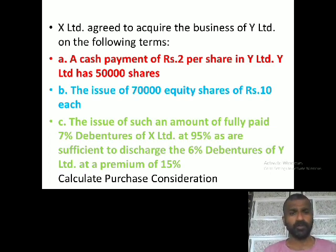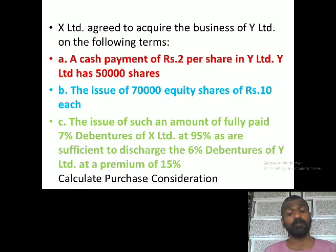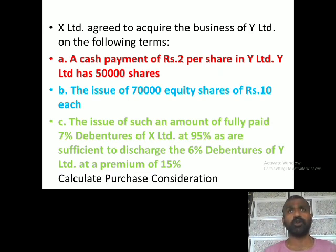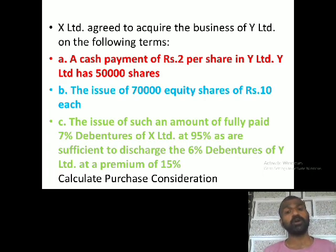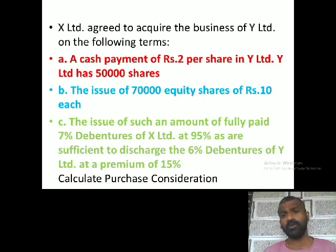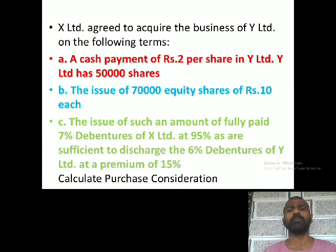There are two companies — you can see X Limited and Y Limited. Two existing companies have got to see an amalgamation. When there is a resulting or purchasing company, you will have an amalgamation. There are a minimum of three companies involved. With only two companies, it becomes absorption.